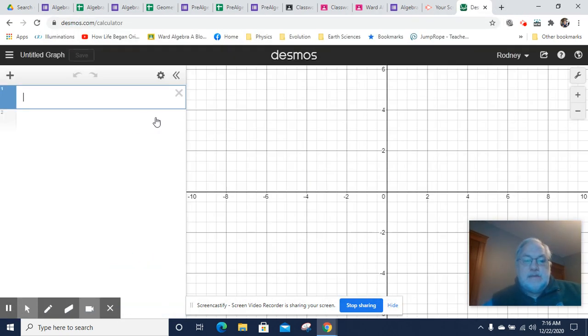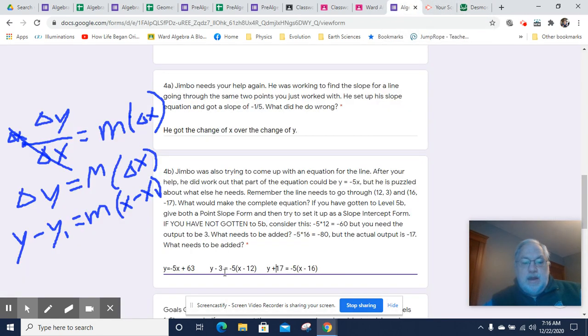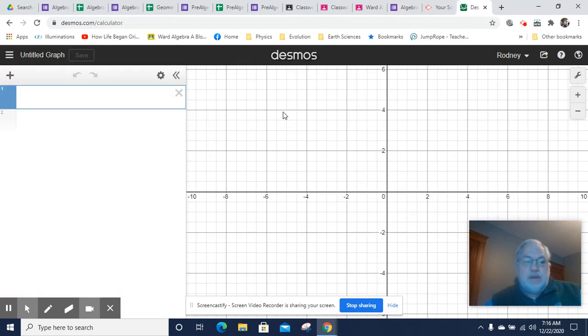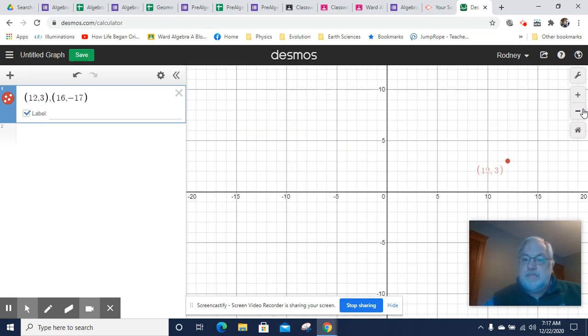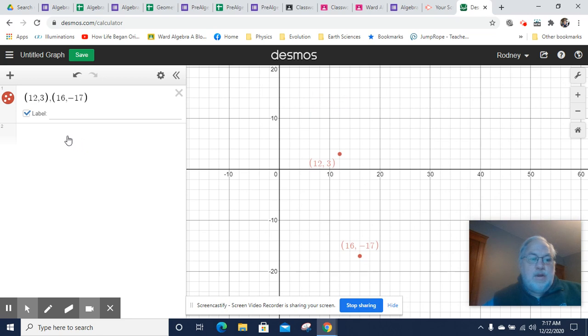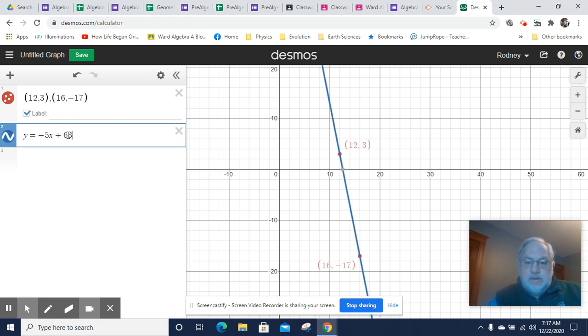And what this does is this is actually called the point-slope form. The point-slope form that I've just shown you here is named after the fact that it uses a slope and a point. So, 12, 3 or 16, negative 17. And then it uses a slope. So first, let's plot those two points. They were 12, 3 and 16, negative 17. And let's zoom out so we can see them.